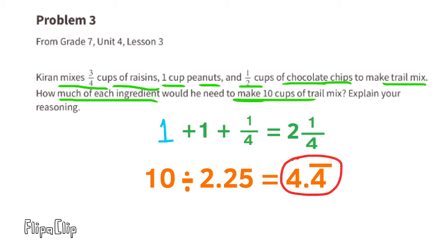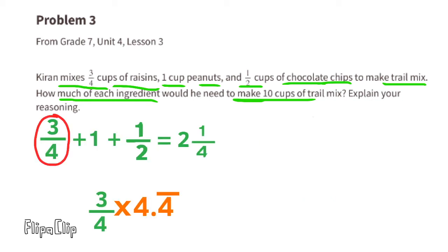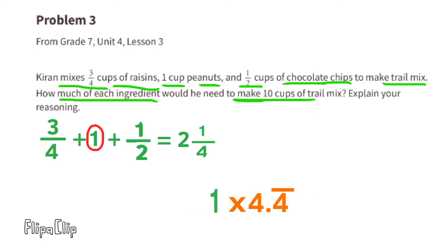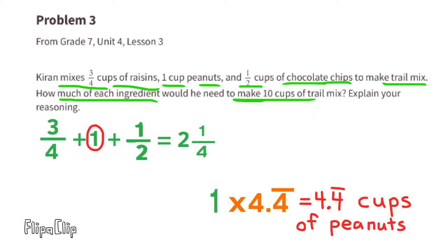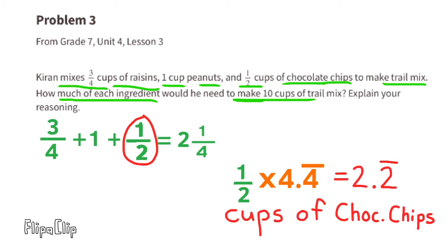Each ingredient will be multiplied by 4.4 repeating to make 10 cups of trail mix. The original amounts are: three-fourths cup of raisins, 1 cup of peanuts, and one-half cup of chocolate chips. Multiplying each by 4.4 repeating: three-fourths times 4.4 repeating equals 3.3 repeating cups of raisins; 1 times 4.4 repeating equals 4.4 repeating cups of peanuts; and one-half times 4.4 repeating equals 2.2 repeating cups of chocolate chips.